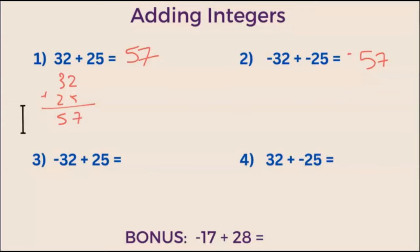Example 3. What is negative 32 plus positive 25? Here we have an example of one positive integer and one negative integer. The rule here is going to be: subtract the absolute values of these integers, and the sign of the integer with the highest absolute value will be the answer. So let's walk through that slowly.